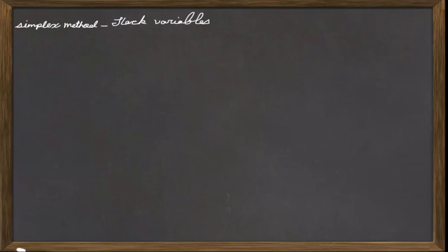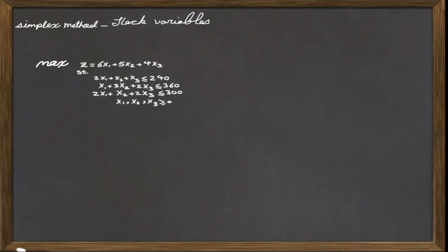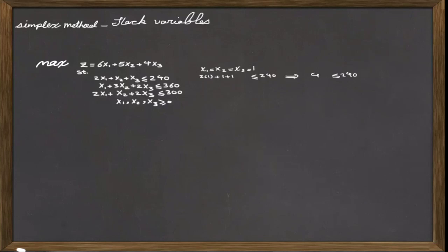To understand the concept of slack variables, let's look at one example. Suppose we have a maximization problem subject to a set of constraints as shown on the screen. This is a feasible solution to the problem because if we replace the values of x's in the constraints of this problem, they are all satisfied. Let's look at the first inequality. If we replace the value of x's in this inequality, we have 4 less than or equal to 240. The condition of the constraint is met.